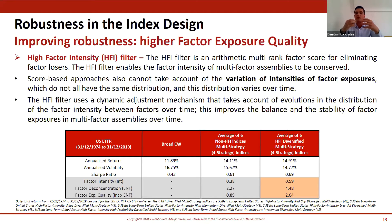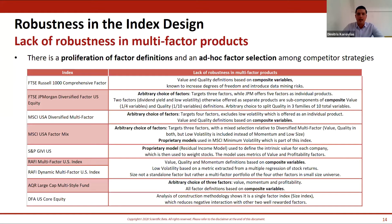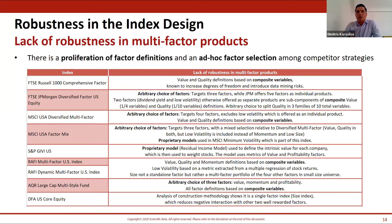In-sample performance can be the result of luck — picking the right factors for the right sample. What makes sense is to have high betas to all factors and balanced exposure to all factors, so that out-of-sample, independent of whether one factor outperforms another, you can have more balanced and smooth performance. At this point we'll look at a couple of examples from competitor indices.